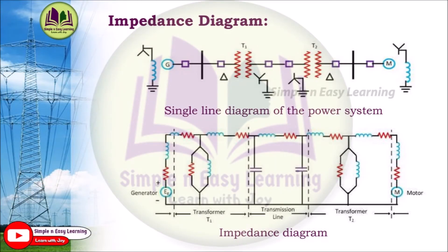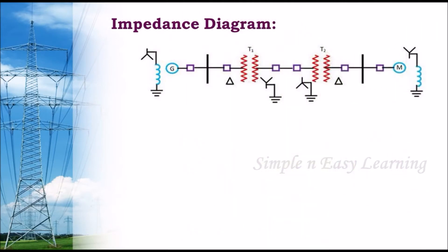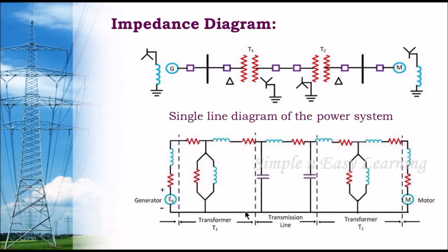Now we see how to draw the impedance diagram from the single line diagram. The single line diagram consists of a generator, transformer 1, a transmission line, transformer 2, and a motor at the end. For the generator section, the generator has resistance as well as reactance R plus Jx. The source EMF, the generated EMF, is denoted as EG. This whole section is called the generator section.